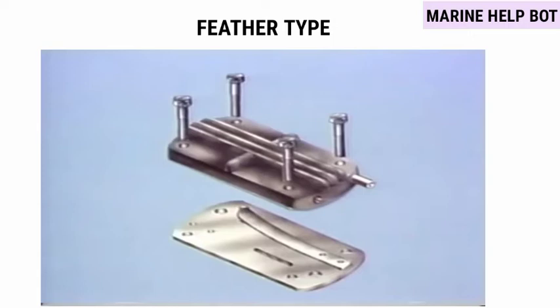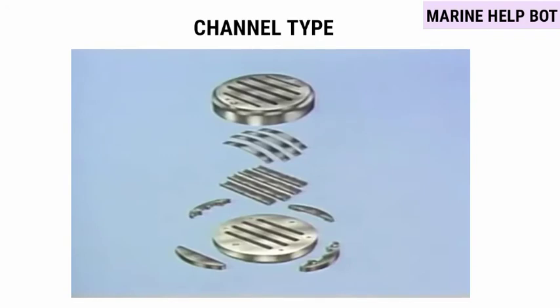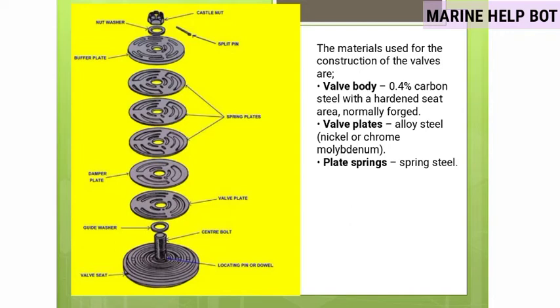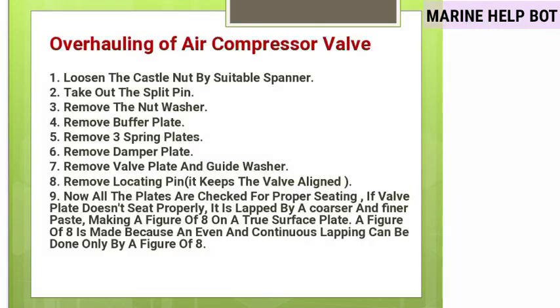The channel type valve has channels made up of strip plates. The surveyor typically asks about all valve constructions and names but not about the working of channel type — only the working of the feather type. Valve body materials: valve body is made of carbon steel, valve plate of alloy steel, and plate springs of spring steel.